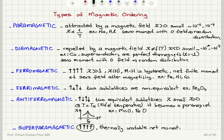To summarize: paramagnets are attracted by a magnetic field; susceptibility is positive and small, inversely proportional to temperature, with zero moment at zero field due to random distribution. Diamagnets are repelled by a magnetic field; susceptibility has no temperature dependence, is small and negative. Superconductors are perfect diamagnets with susceptibility minus one, and again have zero moment with zero field. Ferromagnets show hysteretic behavior in the magnetization curve; susceptibility is field dependent, with a net finite moment at zero field after magnetization.